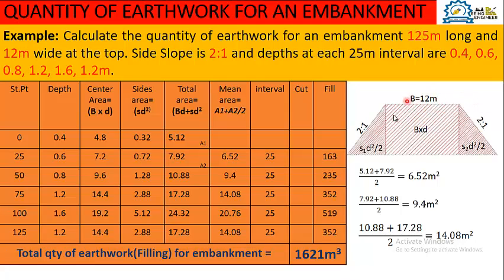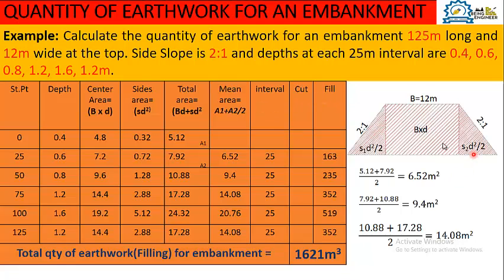As we are using the mean area method, we will have to calculate the area of the embankment. Looking at the diagram, we divide the embankment into three portions: a central portion in the form of a rectangle, and the sides of the embankment in the form of right-angle triangles. We will calculate the area of the central rectangle and the area of the two sides.